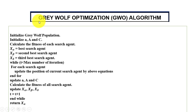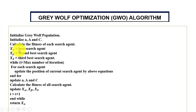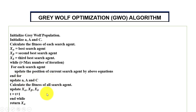The Gray Wolf Optimization algorithm steps are: first, initialize the gray wolf population; then initialize values for A and C coefficient vectors; compute the fitness value for each search agent; choose the best as alpha, second best as beta, and third best as delta. If the condition is true, update the positions of current search agents, update coefficient vectors, compute fitness again, update alpha/beta/delta, increment the counter, and continue until the condition is met. Finally, return the position of the alpha wolf.